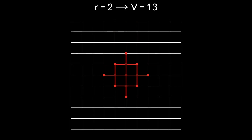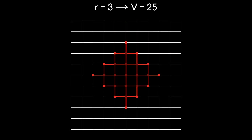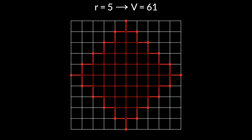Now let's go two edges in every possible direction. By doing so we reach 13 nodes — the five we reached within one edge, now shown in darker red, plus another eight we reach within two edges, now shown in brighter red. r equals 2 gives us v equals 13. We can keep doing this — moving three, four, and five edges in every possible direction. r equals 3 gives us v equals 25, r equals 4 gives us v equals 41, and r equals 5 gives us v equals 61.